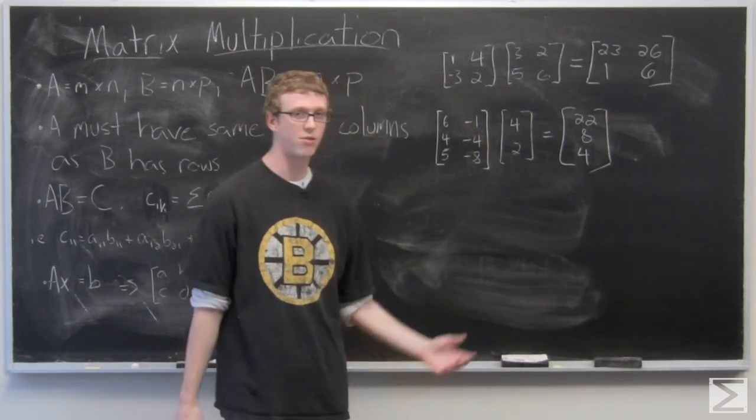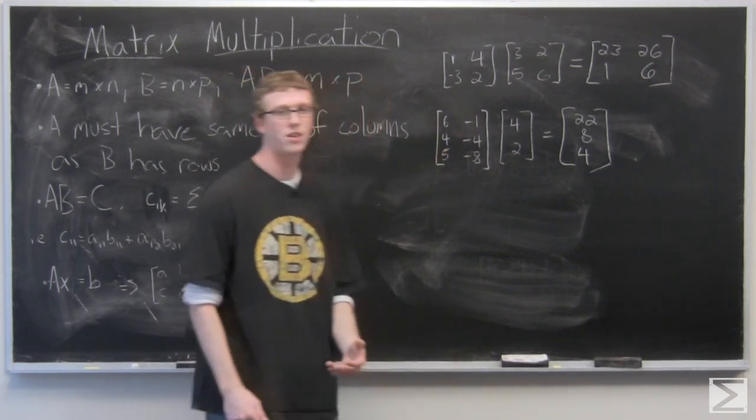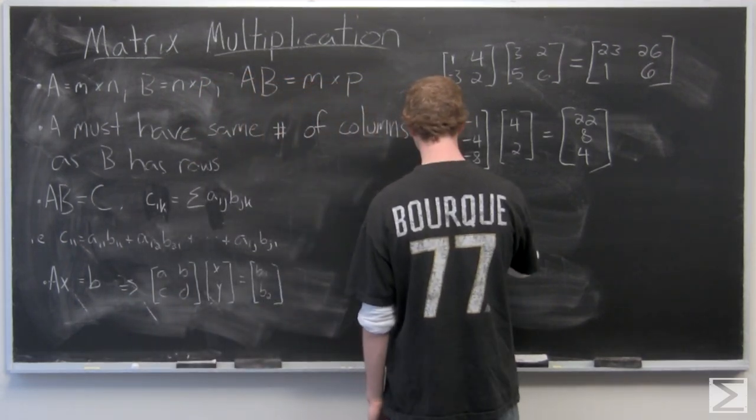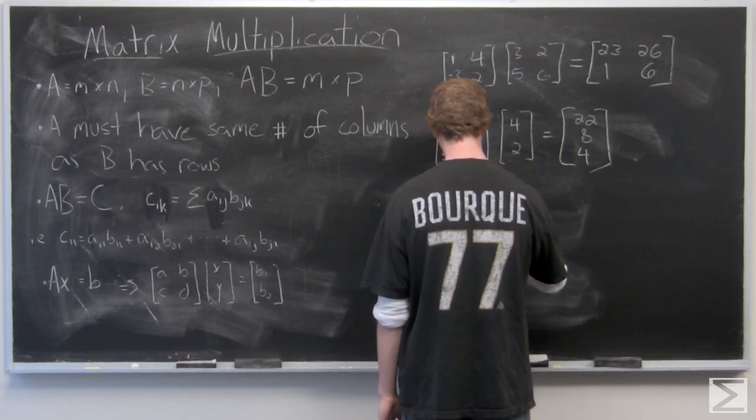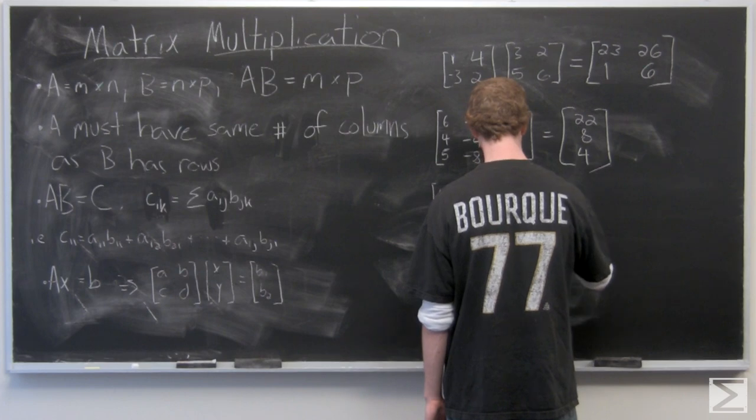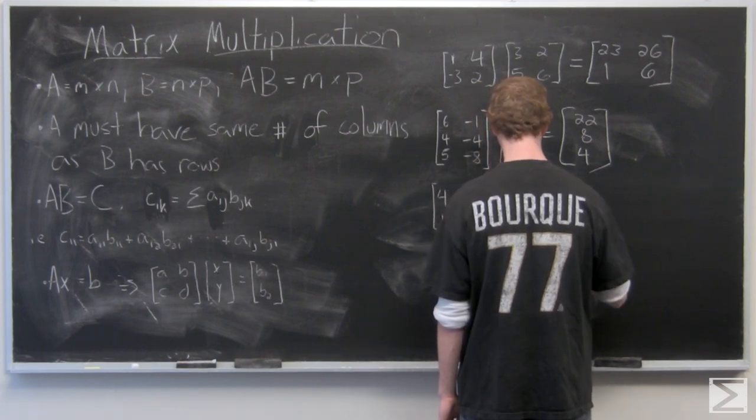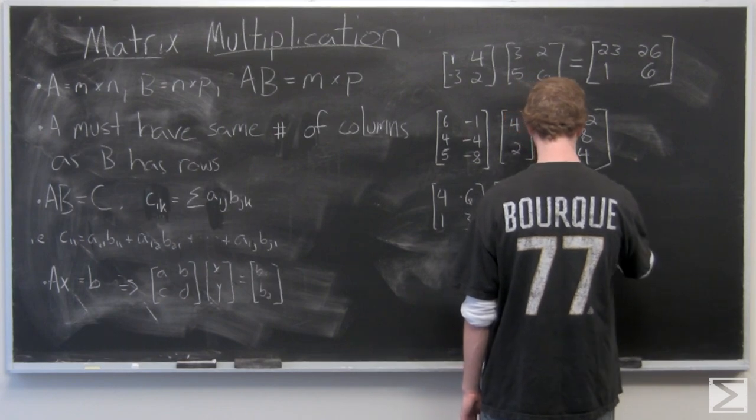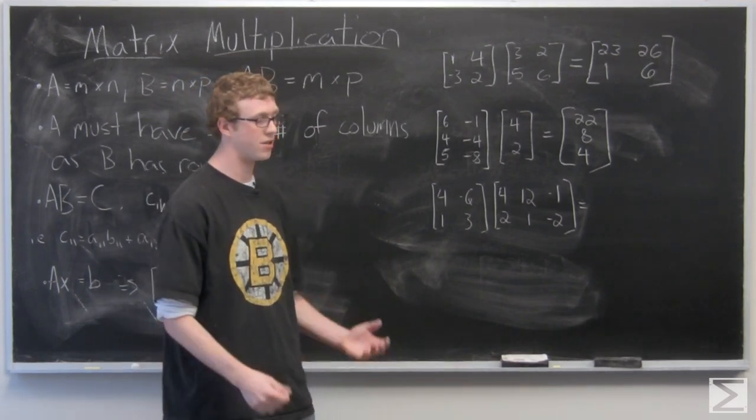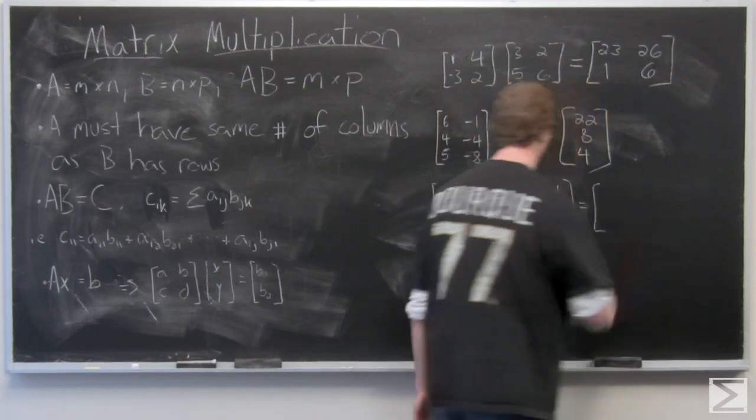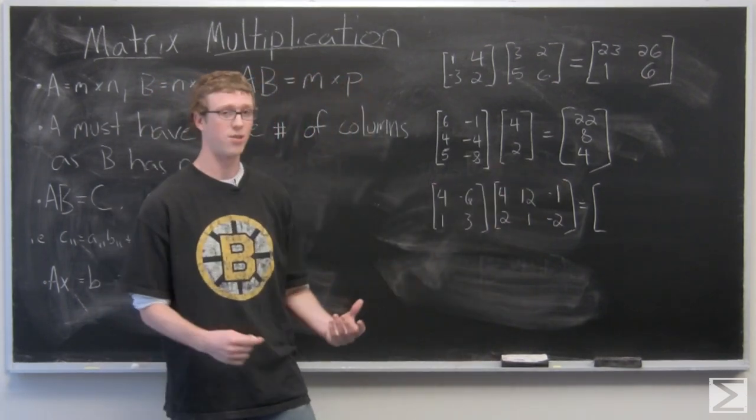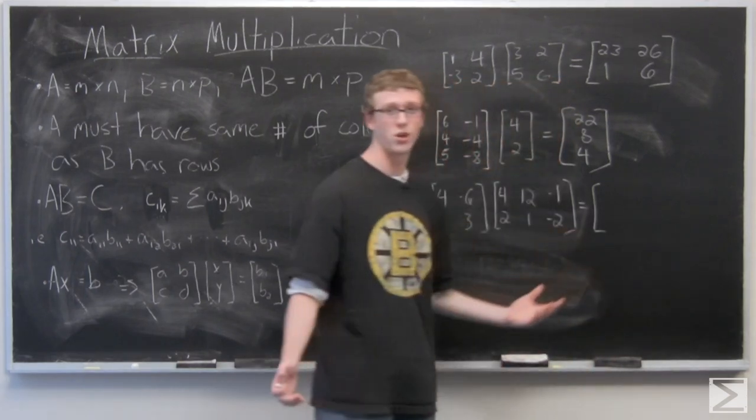So the result matrix is a 3 by 1 matrix 22, 8, 4. Last we're going to take a look, let's do a 2 by 2 and a 2 by 3. So we have a 2 by 2 and a 2 by 3. The resultant matrix is going to be another 2 by 3, which isn't always the case as you saw in that last example. The resultant matrix was not the same size as either matrix.